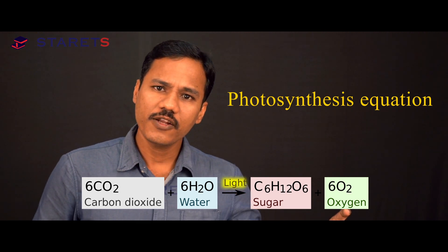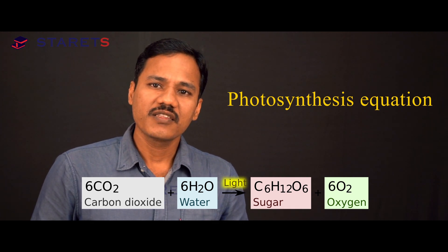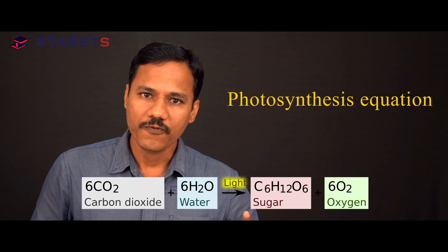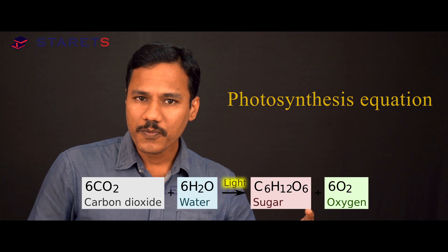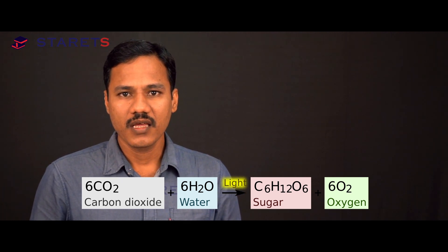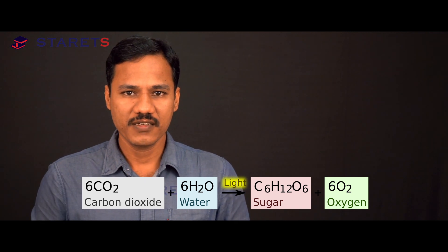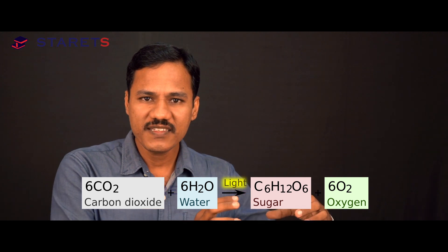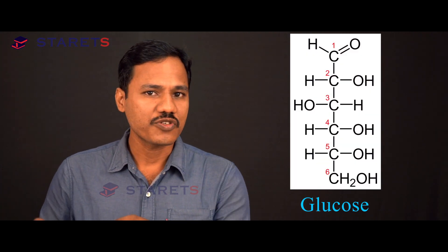But if you closely look at photosynthetic reactions, you will find that the raw materials for photosynthesis are carbon dioxide and water molecules — nothing more than that. These molecules are utilized along with energy in the form of light. Plants use this light energy to convert these simple chemicals like carbon dioxide and water into complex chemical molecules such as glucose.